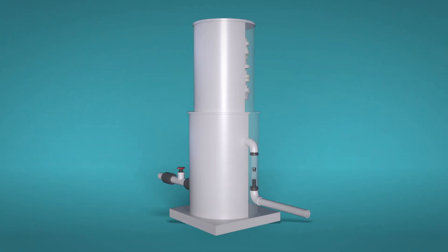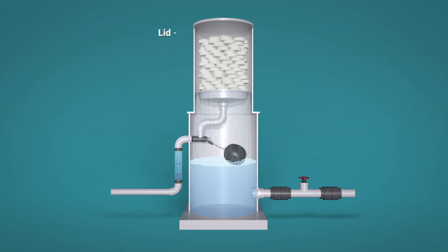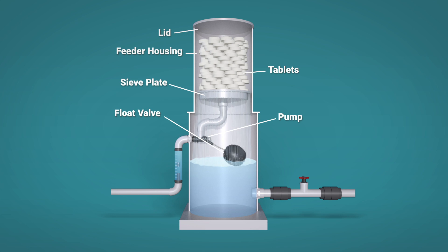Tablet chlorination systems are one method of treating agricultural water. A tablet chlorination tank pumps water through chlorine tablets at the proper rate. It's critical that you monitor the pump rate so that water is chlorinated at the right level.